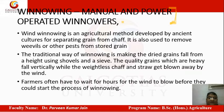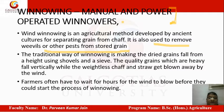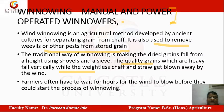Winnowing means the separation of chaff from grain. Wind winnowing is an agricultural method developed by Asian cultures for separating grain from chaff. It is also used to remove weevils and other small pests from stored grains. The traditional way is making dried grains fall from a height using shovels and sieves — heavy quality grains fall vertically, while chaff and straw get blown away by the wind.